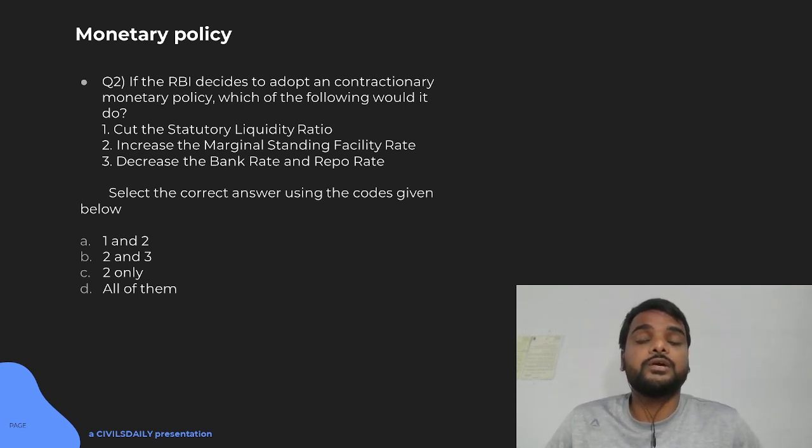It's not that the goal is to keep it low. So, here your option 1, 2 and 3 will be true. Next question again on the Monetary Policy. If the RBI decides to adopt a contractionary monetary policy, which of the following would it do? We know that in Keynesian model of economics, we follow the counter-cyclical policy.